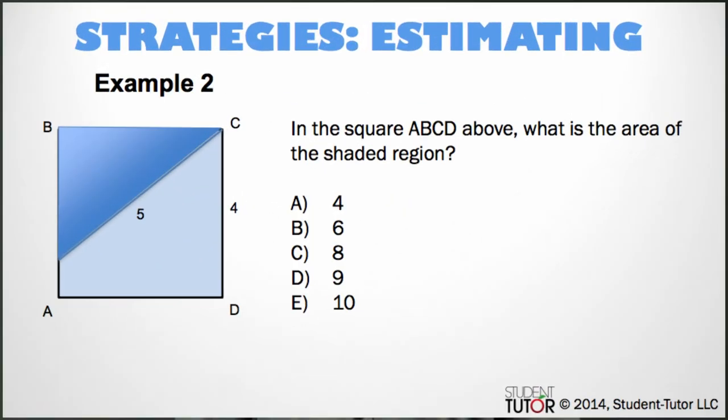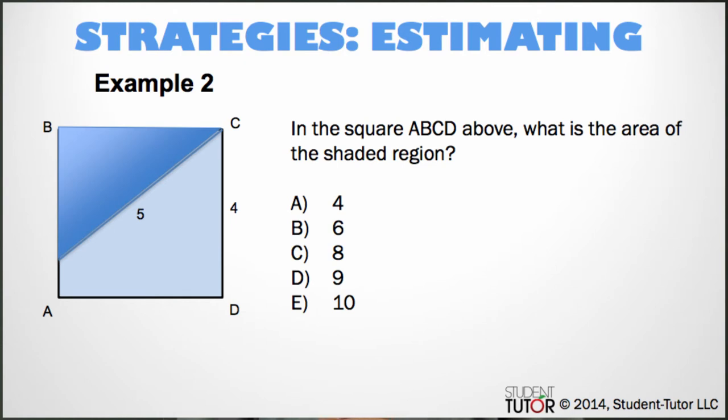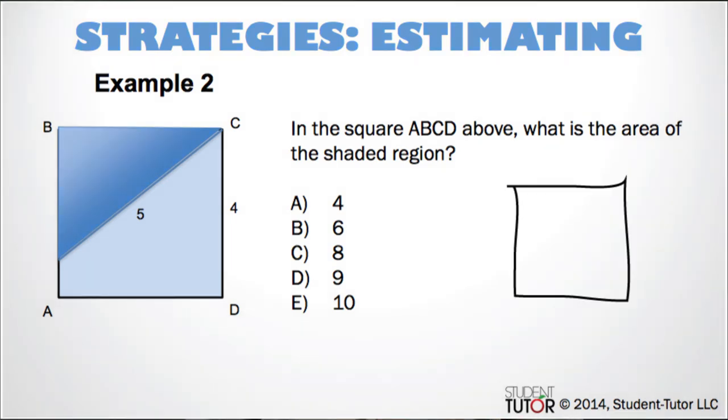Now that we did a drawing your own diagram example, let's try a quick one with estimating the answer from an already existing diagram. So with this diagram, you know that it's a square because, well, it says it's a square. And so you know the area of the whole thing is 4 times 4. So 16.